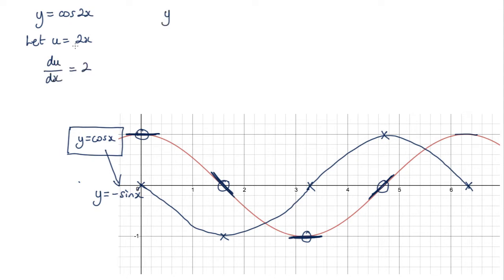Now using this substitution here, I know that y is now equal to cos u. And dy by du, just differentiating this using this rule here, I'm going to get negative sine of u.